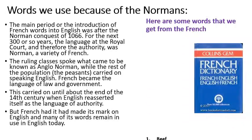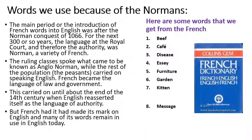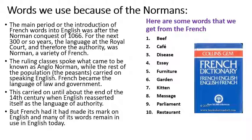As well as the physical impact of William's conquest, we also have many things we may not have realised come from that conquest, such as French words that were gradually merged into the English language — for example: beef, cafe, disease, essay, furniture, garden, kitten, message, parliament, restaurant, and soldier.